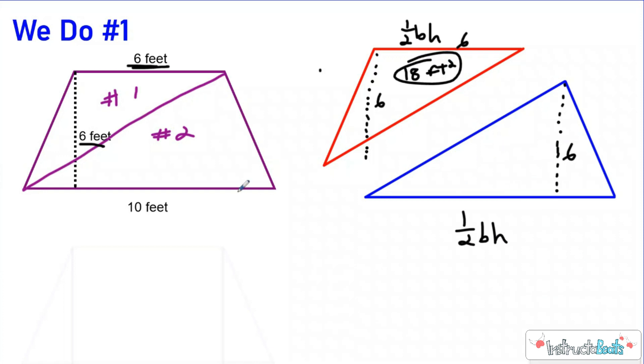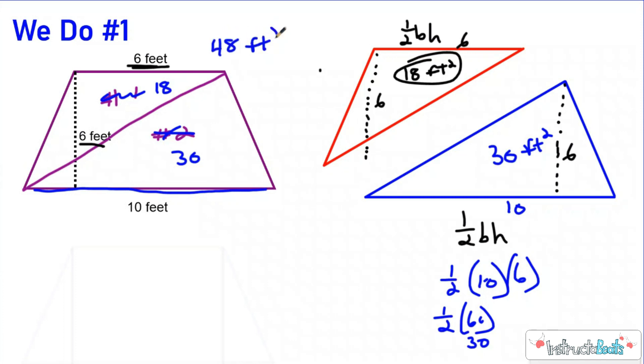Now over here in the blue, we can see that the base for the blue triangle was 10. The height is still 6. So if we do 1 half 10 times 6, that's going to be 1 half times 60, which is going to give me an area of 30. So the area for this triangle part is 30 feet squared. So now if we know that this is 30 and that's 18, if we bring those back together, the total area for this trapezoid is going to be 48 feet squared.